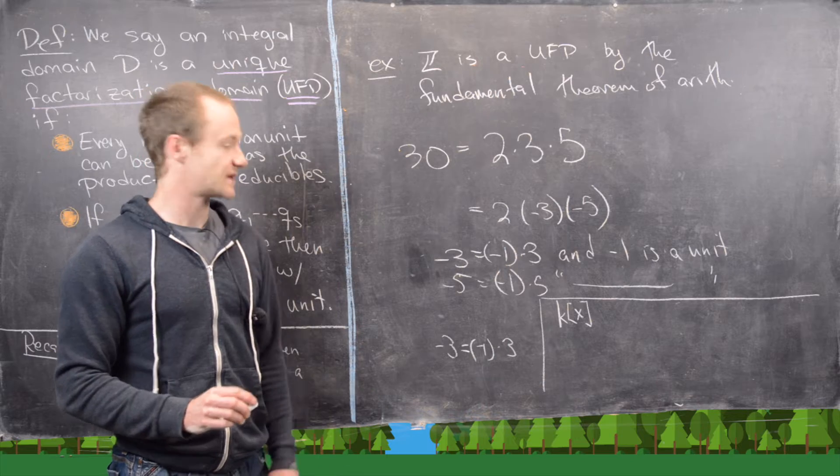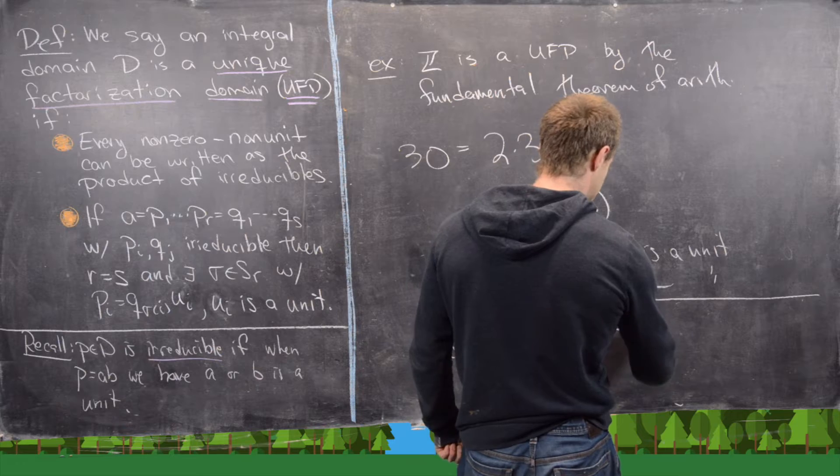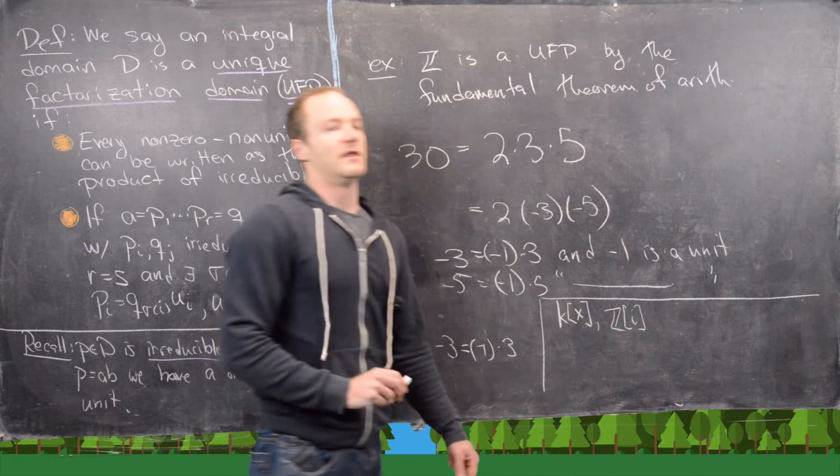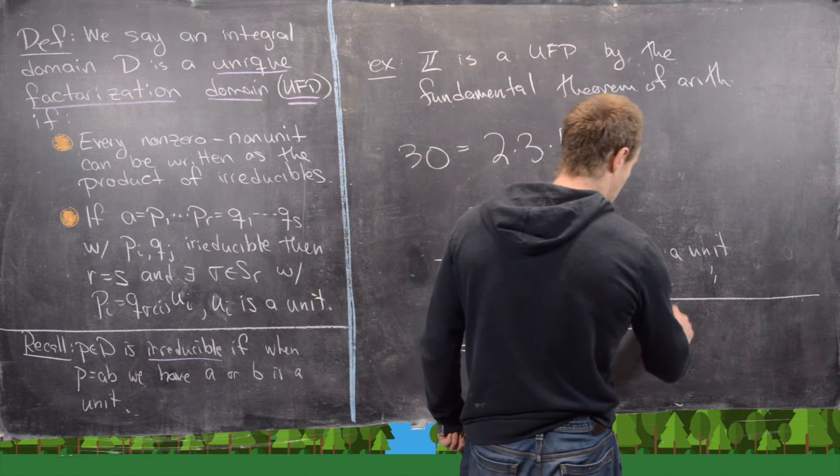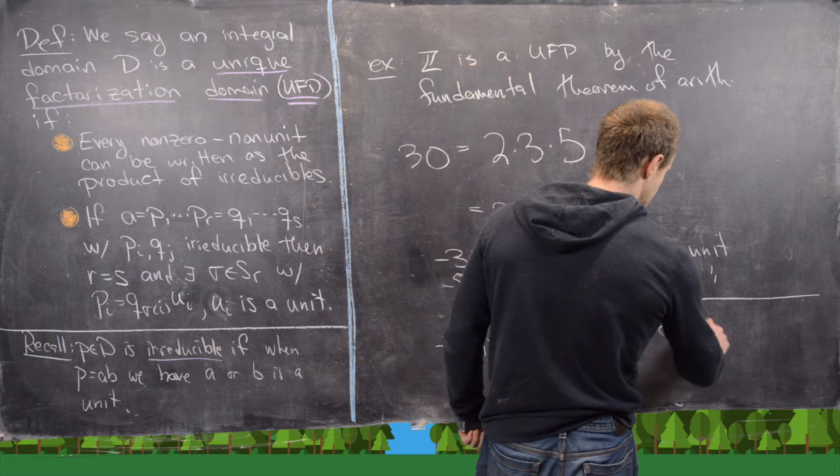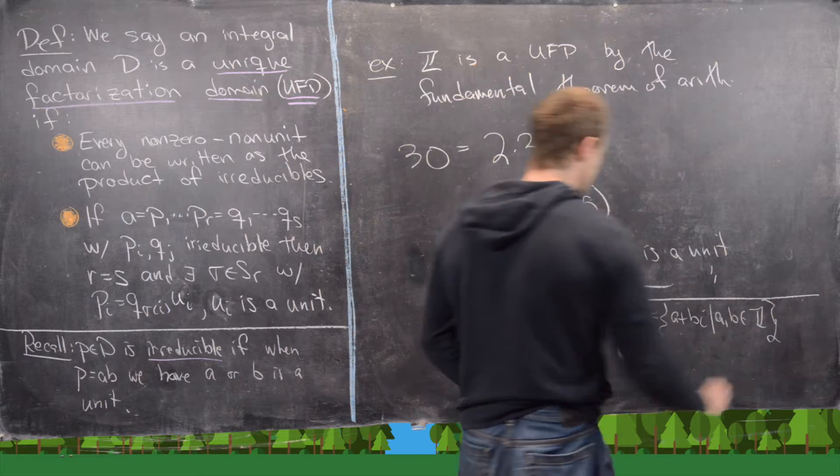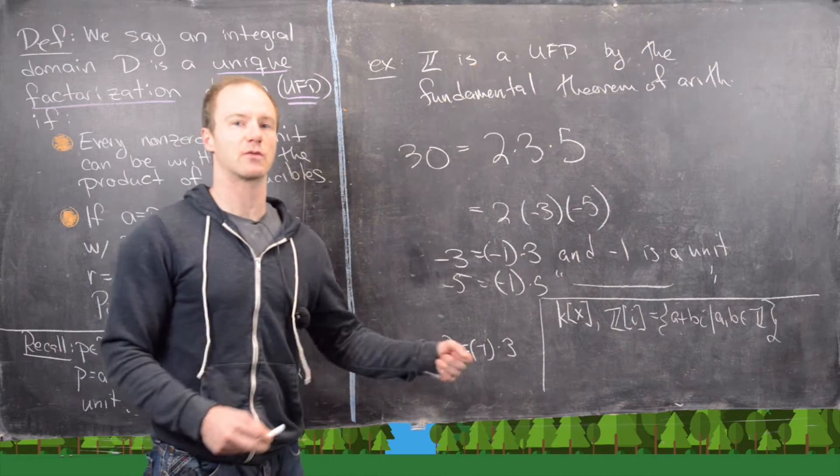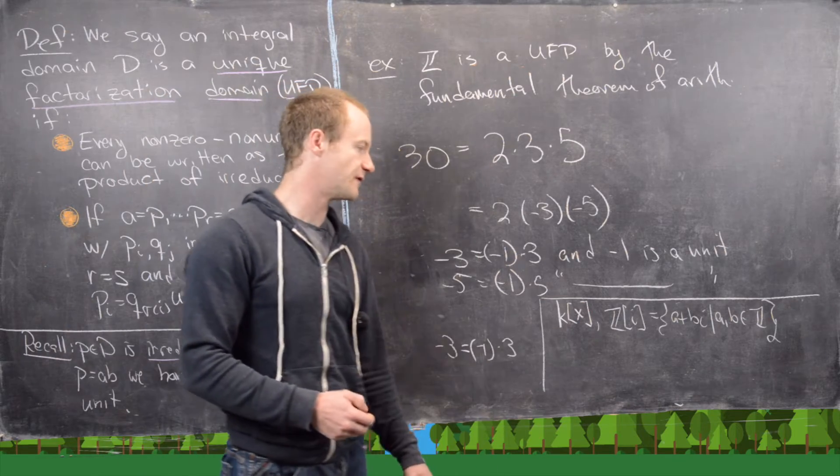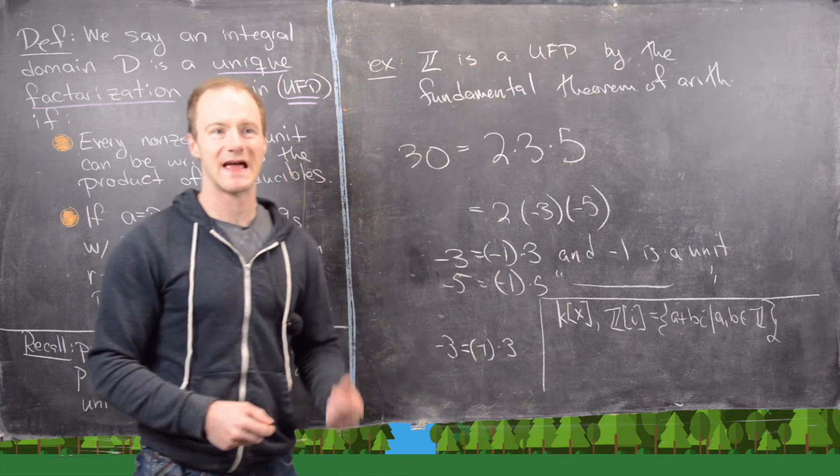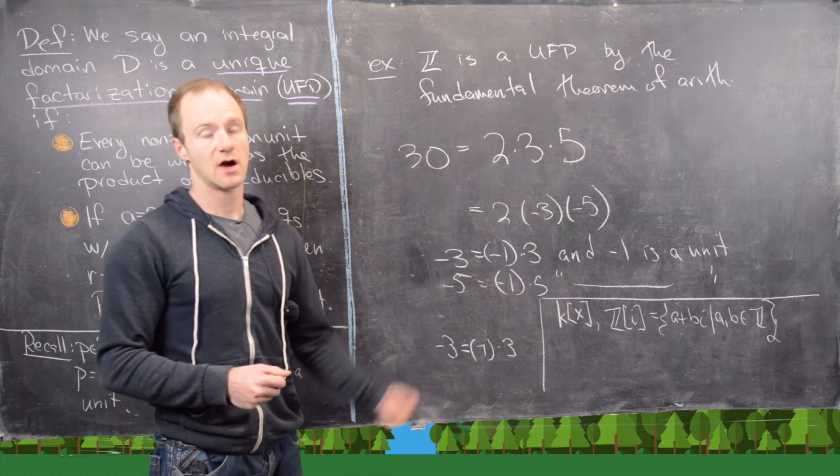And then the Gaussian integers, in other words, the subring of the complex numbers with integer coefficients, that is also a UFD. So we'll see proofs of these later, but they're going to rely on some bigger results. And it's almost not worth it to prove these two results kind of by hand because it's just as easy to prove the big general results.